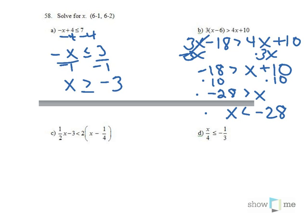In 58D, I need to get x alone. And all I'm going to do is multiply both sides by 4. On the left-hand side, it cancels. So x is less than or equal to negative 4 over 3. And I did not need to flip my inequality because I multiplied by a positive 4.